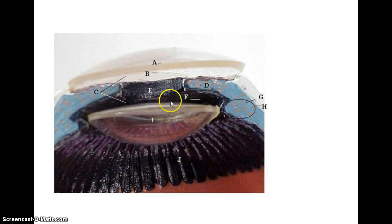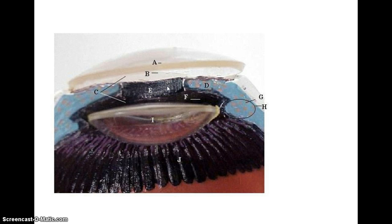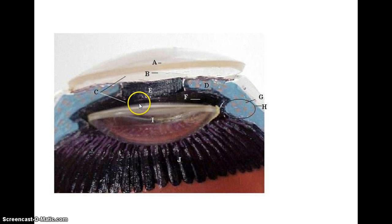Now we're going to look at the anterior aspect of the eye in detail. Here you can see the cornea, here's the lens, and here's where the pupil is — you can see that opening. The anterior cavity runs from the cornea back to the lens, represented by C here. Within the anterior cavity you have the anterior chamber and the posterior chamber.